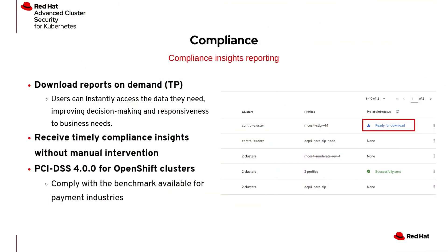Compliance reporting is now available as Tech Preview for OpenShift clusters running compliance operator 1.6 or later. It enables users to access compliance scan results in a CSV file, with options to generate reports on demand via the UI or API, or receive them via email after each scan. ACS also includes the new PCI DSS 4.0 profile in their compliance operator 1.6, designed for the financial sector's needs.